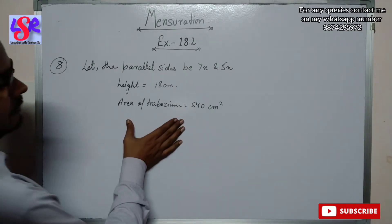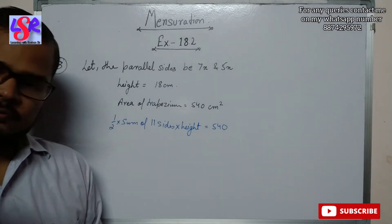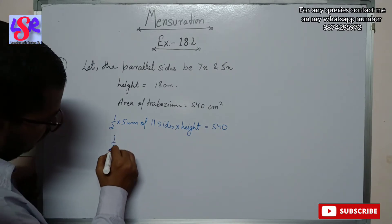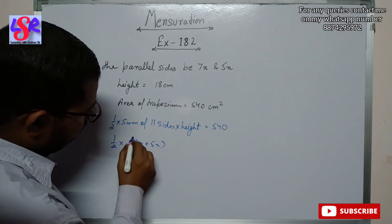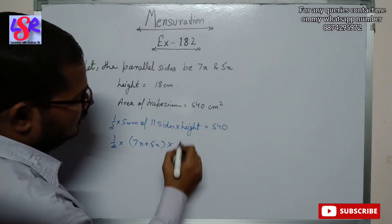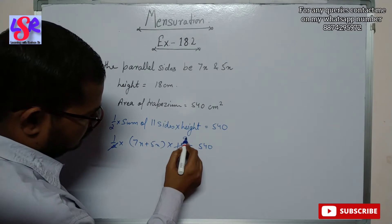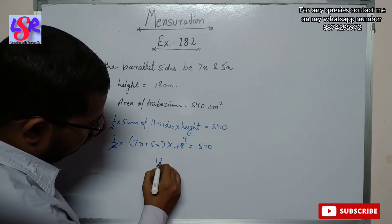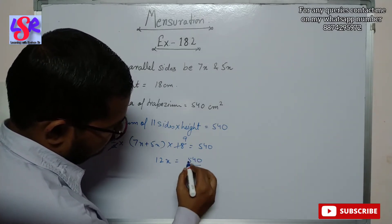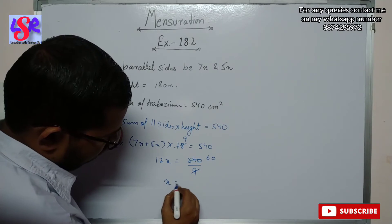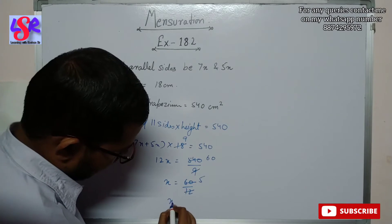The formula for the area of a trapezium is half times the sum of parallel sides times height, which equals 540. So (1/2) × (7x + 5x) × 18 = 540. The 2 cancels with 18 to give 9, so 12x = 540 ÷ 9 = 60. Therefore x = 60 ÷ 12 = 5.